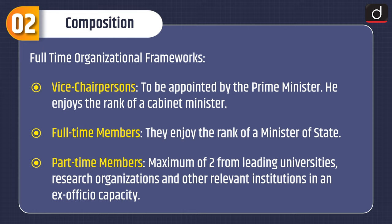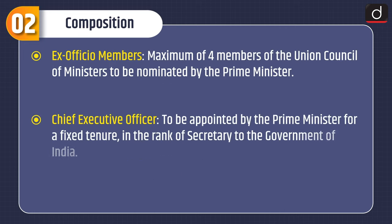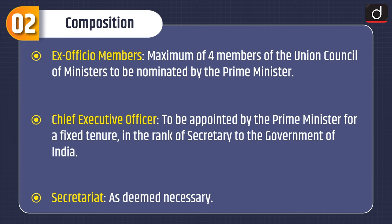Full-time members enjoy the rank of a Minister of State. Part-time members, maximum of two, from leading universities, research organizations and other relevant institutions in an ex officio capacity. Ex officio members, maximum of four members of the Union Council of Ministers to be nominated by the Prime Minister. Chief Executive Officer to be appointed by the Prime Minister for a fixed tenure in the rank of Secretary to the Government of India, and Secretariat as deemed necessary.